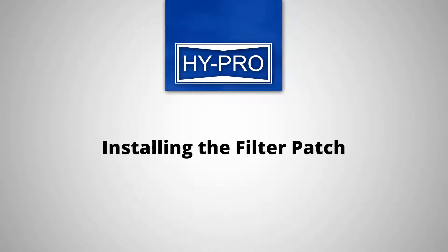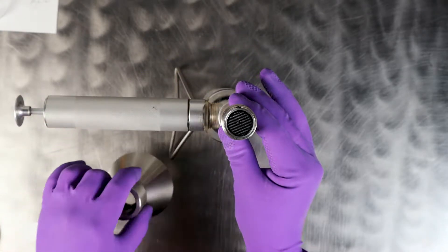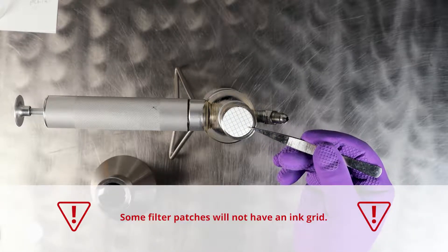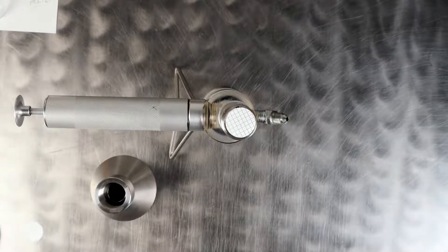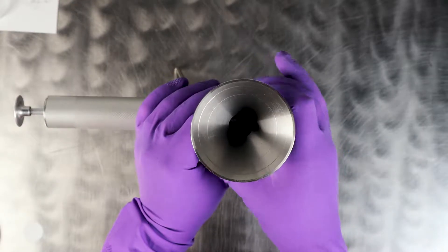Installing the filter patch. Separate the sample funnel from the patch supporter and install a single filter patch with the ink grid facing up. Please note that some filter patches will not have an ink grid. Reattach the sample funnel to the patch supporter, ensuring that the two pieces are properly secure.